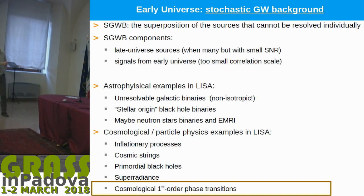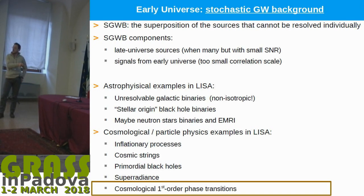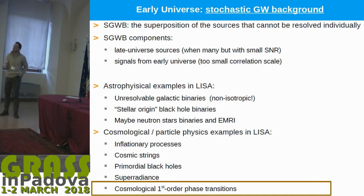In LISA, we expect this kind of sources for the astrophysical background. We have the galactic binaries. Luckily, these sources are not isotropic because they are in the galactic disk, so by the fact that LISA is moving during the year, we can remove part of this signal. And we have what we call stellar origin black hole binaries — essentially what LIGO and Virgo detected.